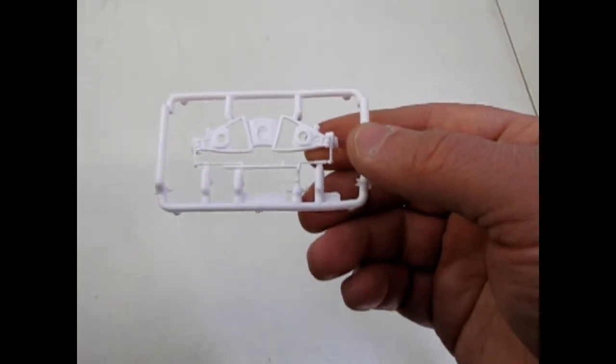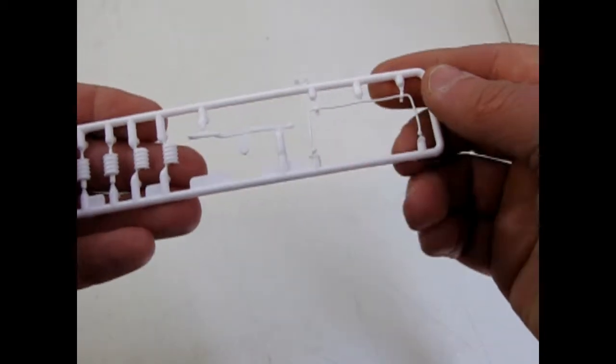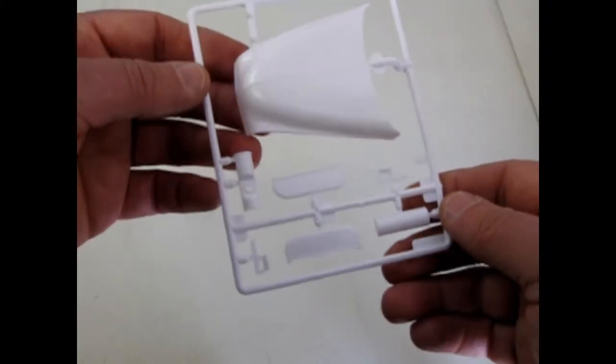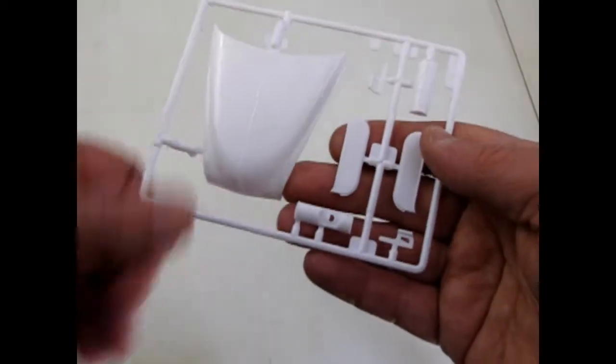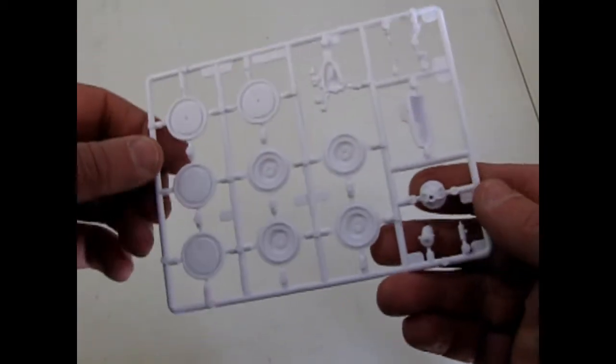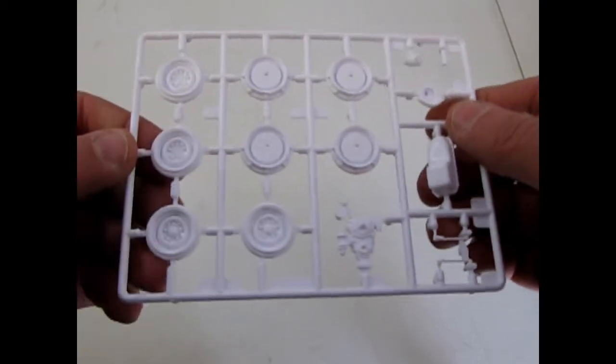And there's our upper A arms or lower A arms for the suspension. And here we have all the springs and some of the tie rod ends. There's the hood and fender skirts. And this strange piece is actually the air cleaner.